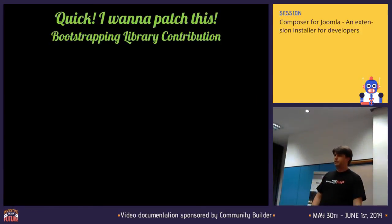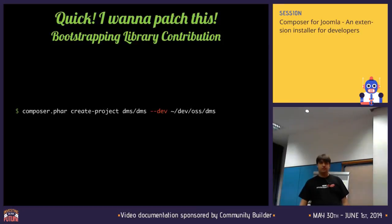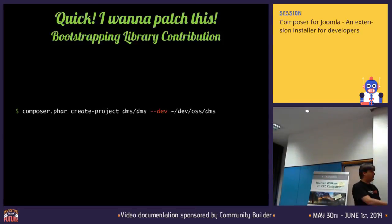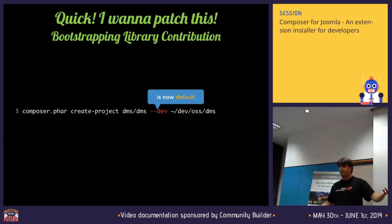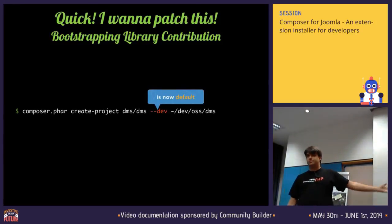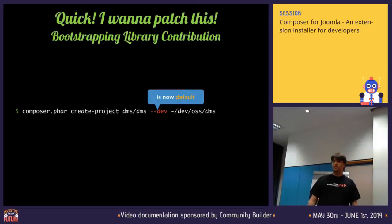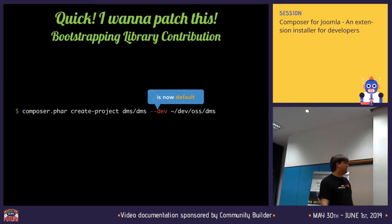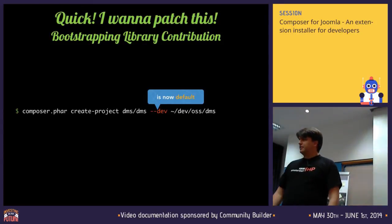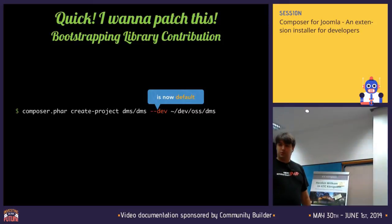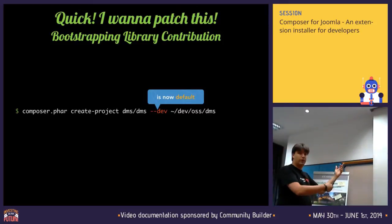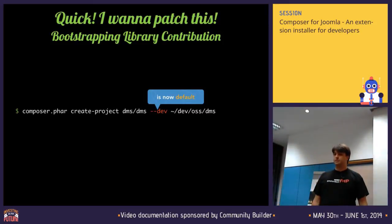Contributing to an open source project — use create-project and find the library you're going to contribute to. You used to have to add --dev, but now you don't need it because it's the default. Just run create-project on that open source project. The Joomla DMS library is pretty good if you guys want to contribute — it does things like input filtering and stuff — and that's one way to really get started on contributing to something.